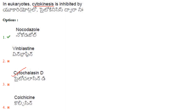In eukaryotes, cytokinesis is the final stage of cell division where the cytoplasm is divided into two daughter cells. It involves the formation of a contractile ring composed of actin and myosin filaments. Cytochalasin D is a naturally occurring fungal toxin that disrupts the formation and maintenance of actin filaments, preventing polymerization of actin and thus inhibiting cytokinesis. So cytokinesis is inhibited by Cytochalasin D — not nocodazole, which may be a printing mistake.